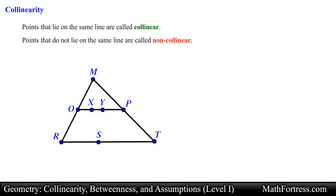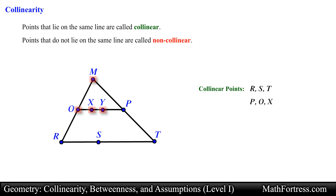In the following diagram, points R, S, and T are collinear points. Points P, O, and X are also collinear. Notice that points M, O, X, and Y are non-collinear.